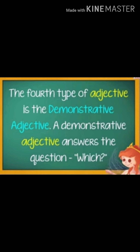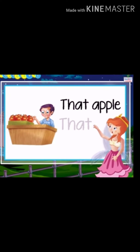The fourth kind of adjective is the demonstrative adjective. A demonstrative adjective answers the question, which? For instance, this stain or that apple. The words that, this, and words like these and those are the demonstrative adjectives.